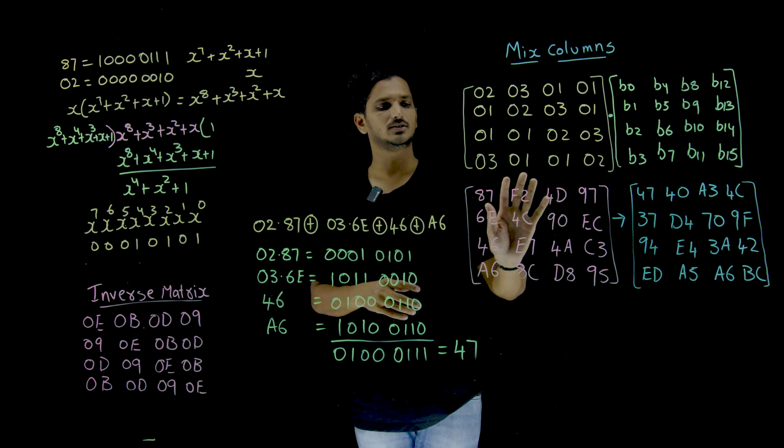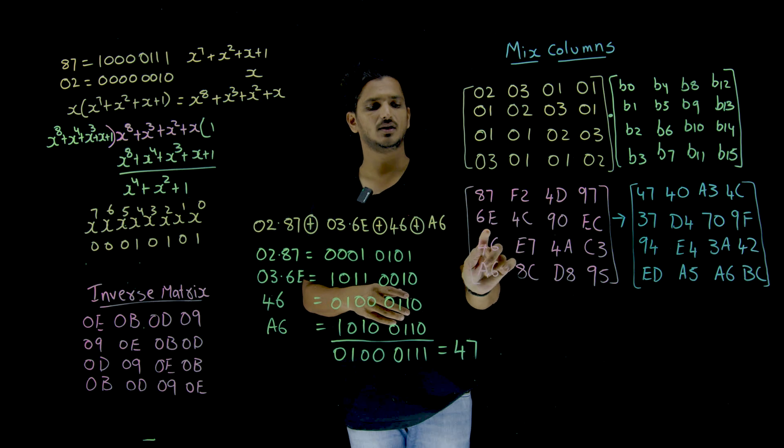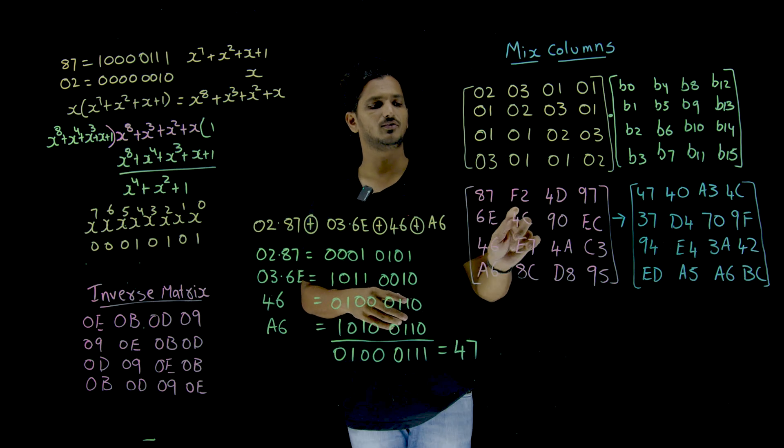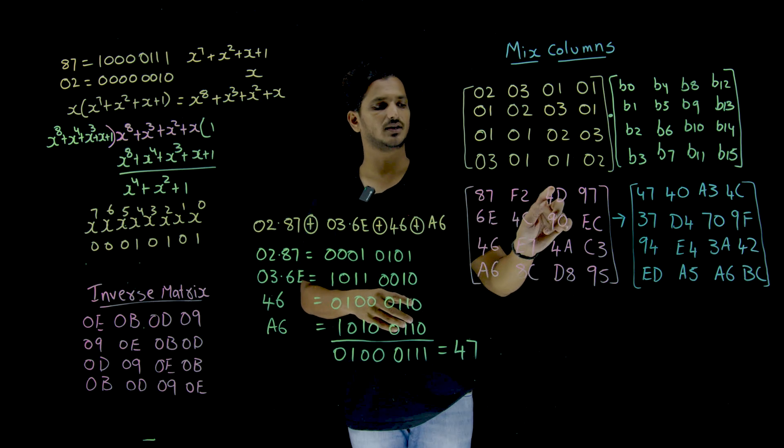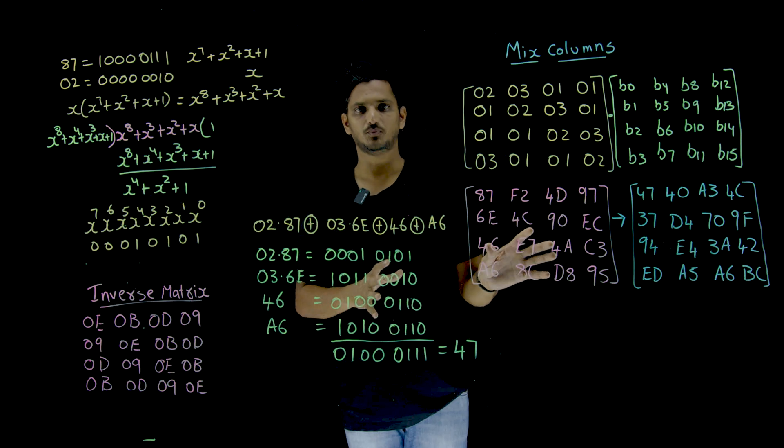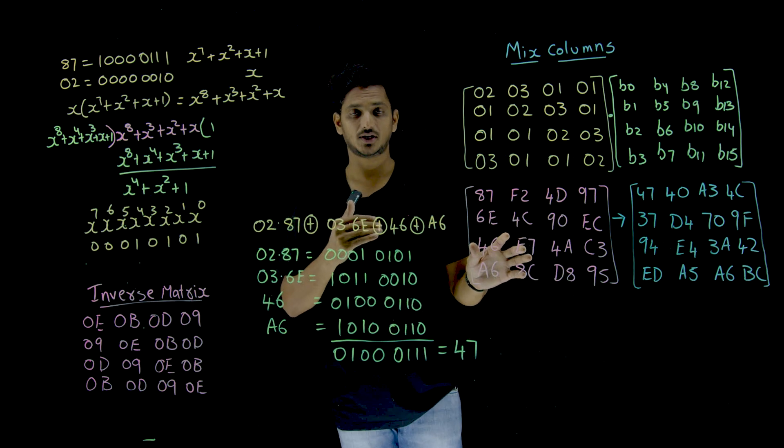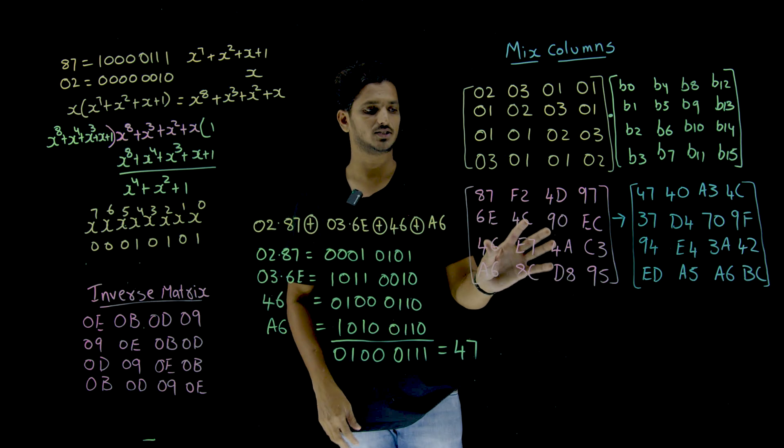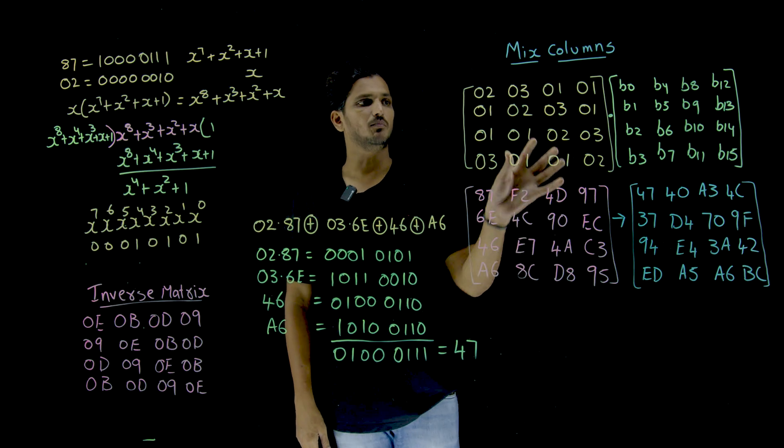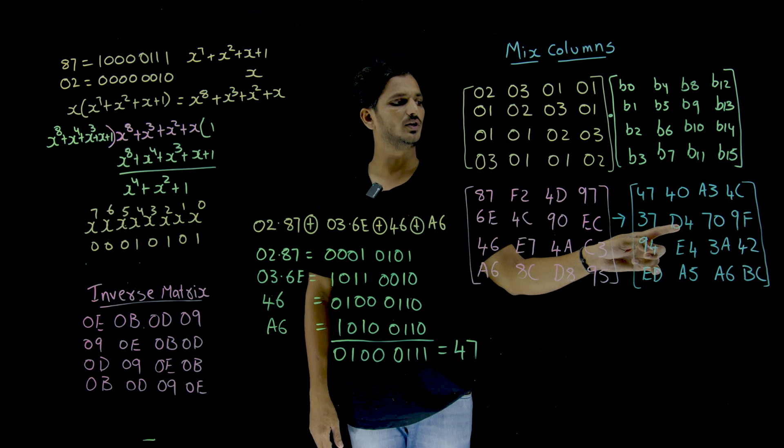Let us take this. Instead of this B0, B1, take this 87, 6E, 46, A6, F2, 4C, E7, 8C like this. You are going to take this input that comes from the second stage is taken as input to the third stage. This multiplied by this.